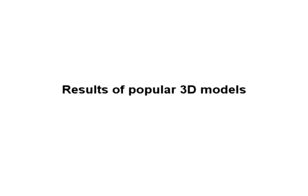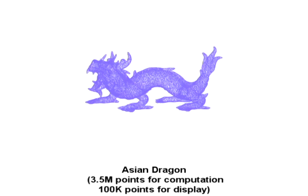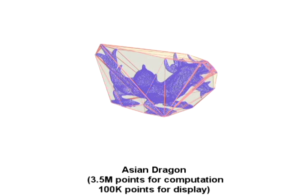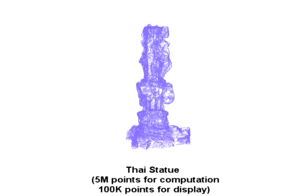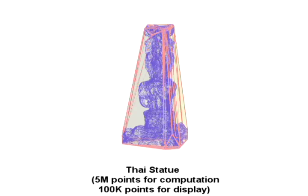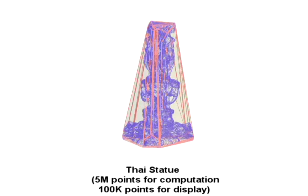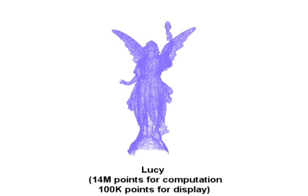Next, we show three sample results of popular 3D models with millions of points densely distributed on their surfaces. The Asian Dragon model, the Thai Statue model, and the Lucy model.